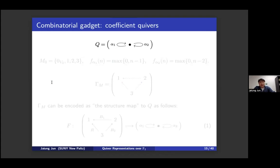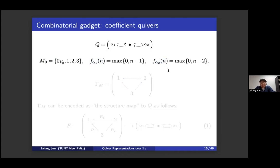At the beginning of our project, Alex and I called these 'colored quivers,' but a referee pointed out they are similar to what Ringel called coefficient quivers, so we changed the name. The idea is simple: consider a quiver with a single vertex and two arrows α1 and α2. An F1 vector space consists of elements {0, 1, 2, 3}. We attach two F1 linear maps and can visualize this: vertices are non-zero elements in the F1 vector spaces, and we color arrows so that blue arrows come from f(α1) and red arrows from f(α2).